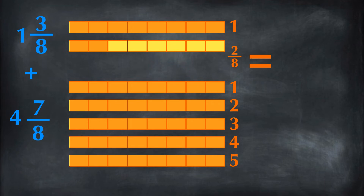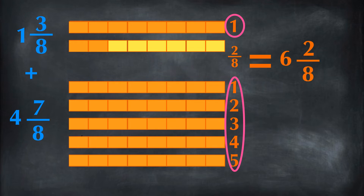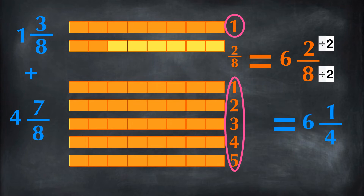Therefore, we have 6 whole things and fraction 2 eighths. 2 eighths can be simplified by dividing by 2 on both numerator and denominator. The final answer is 6 and 1 fourth.